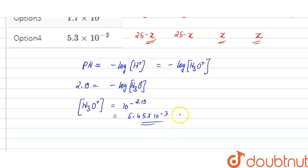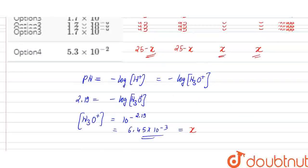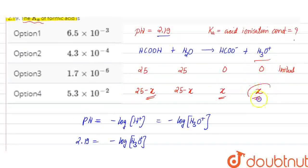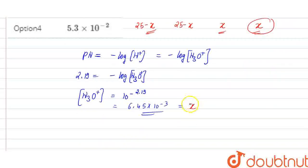This is my hydronium concentration, which is also equal to the X value. This X equals 6.45 × 10⁻³.